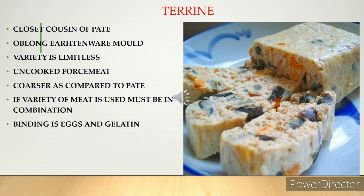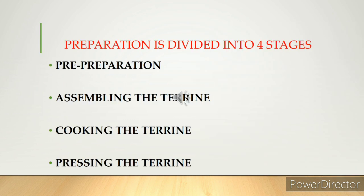Terrines are the closest cousins of pâté. The terrine vessel is an oblong earthenware mold — this was the original vessel used, and that is how the terrine got its name. The force meat used in a terrine is usually uncooked and slightly coarser compared to pâté. Various force meats can be used and layered, but the varieties should complement each other. The four stages are: preparation, assembling, cooking, and pressing.